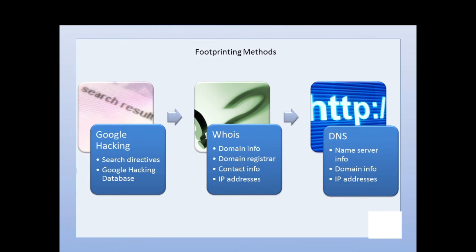Another method is Google hacking, which is the topic of an entire chapter coming up. Basically, you use advanced search directives and the Google Hacking Database to get particular information about an organization's infrastructure. We also have WHOIS and DNS methods. WHOIS is a registrar that gives us domain information, contact information in the company, the IP address range, and so forth.